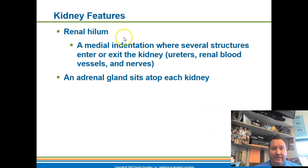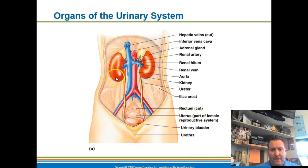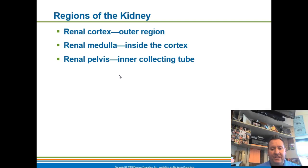Key structures of the kidney include the renal hilum — an indentation where tubules, the ureter, renal artery, renal vein, and major nerves enter or exit the kidney. At the top of the kidney sits the adrenal gland, which we discussed in the endocrine system. The kidney is divided into three major regions: the outer cortex, the middle renal medulla, and the inner renal pelvis.